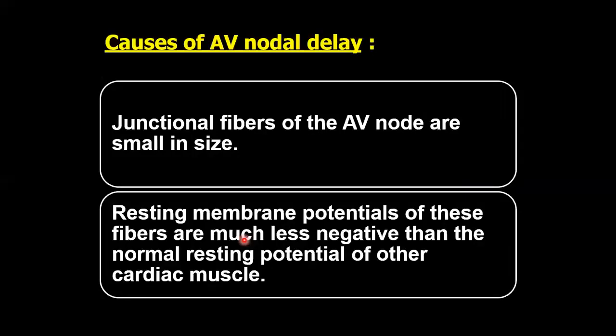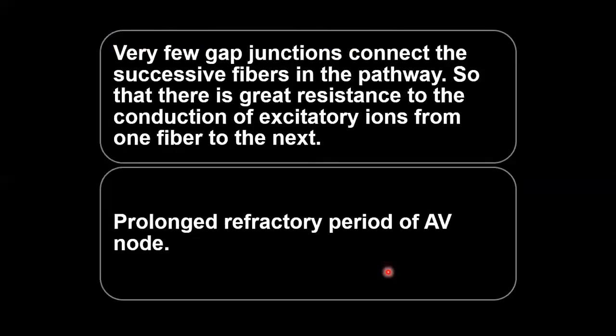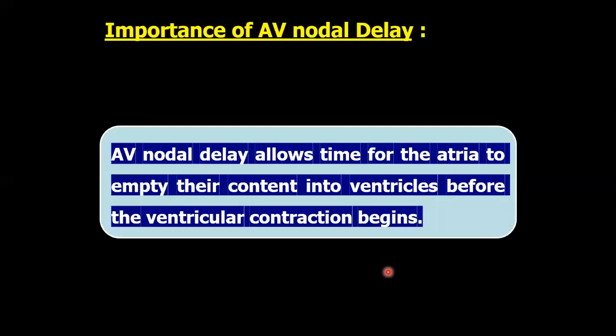Causes of AV nodal delay: the junctional fibers of the AV node are smaller in size; the resting membrane potential of these fibers is much less negative; very few gap junctions are available; and there is a prolonged refractory period. Importance: AV nodal delay allows time for the atria to empty their contents into the ventricles before ventricular contraction begins, giving enough time for the atria to empty their contents.